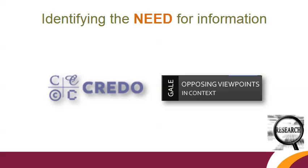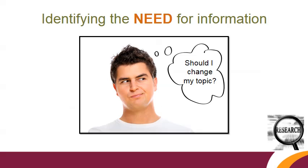Next, explore general information sources. Credo and Opposing Viewpoints are two of the library's online resources that provide general information organized into topic pages. You might need to change your topic or research question based on the information you learn.